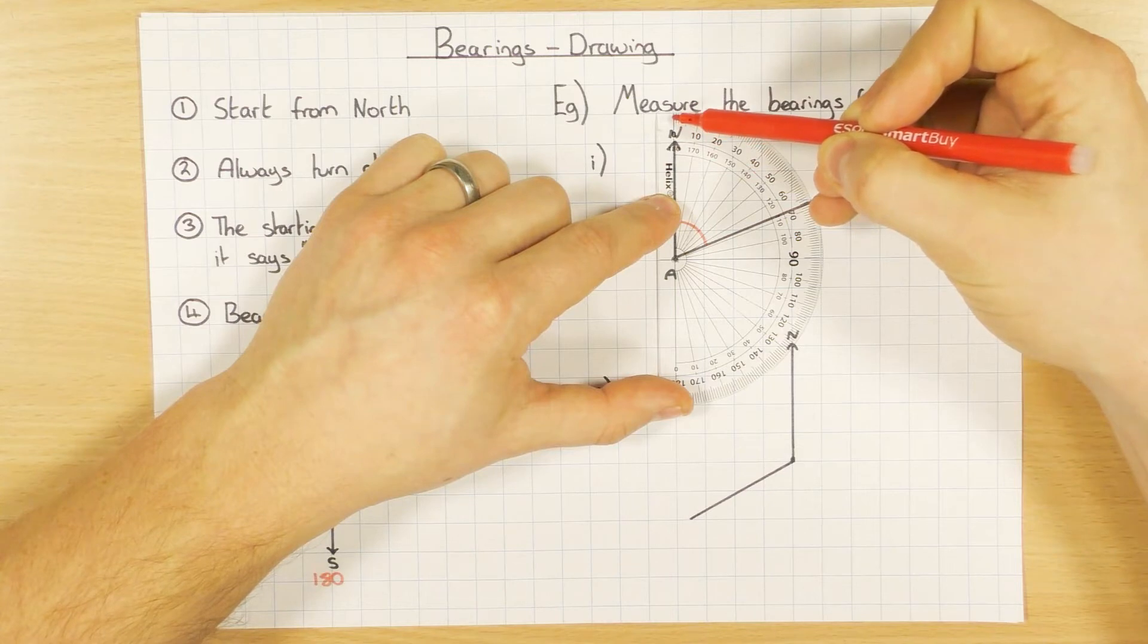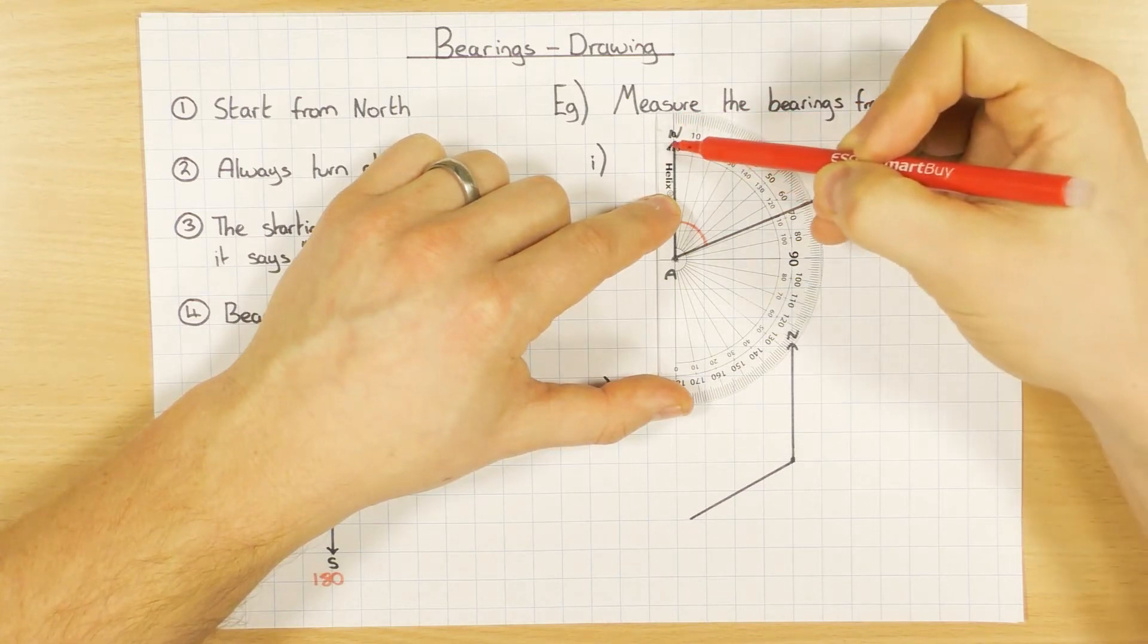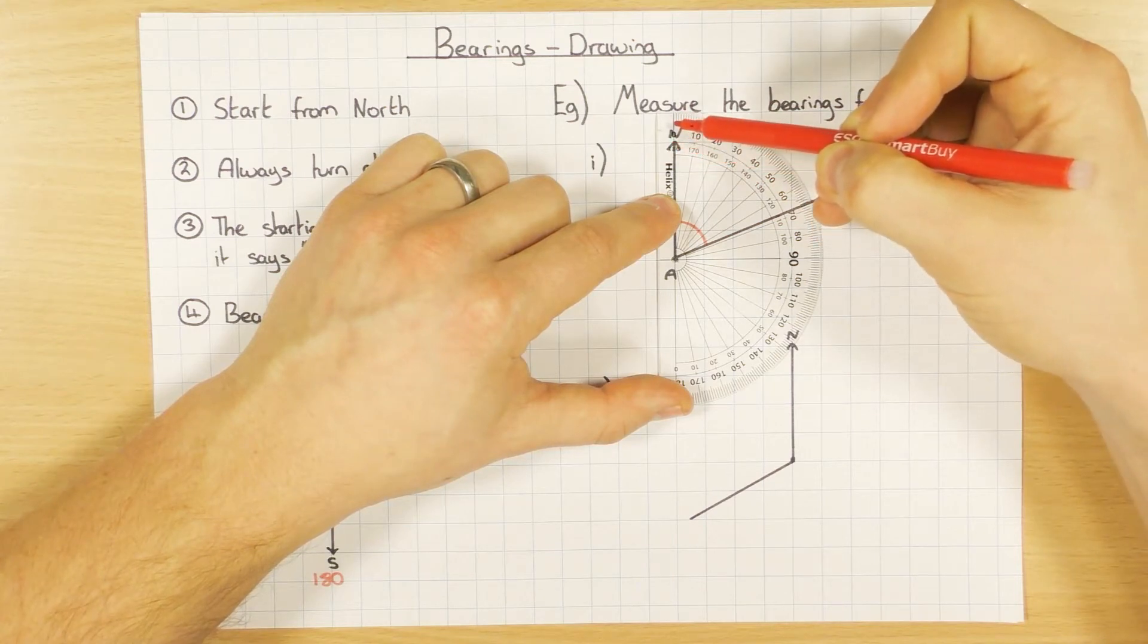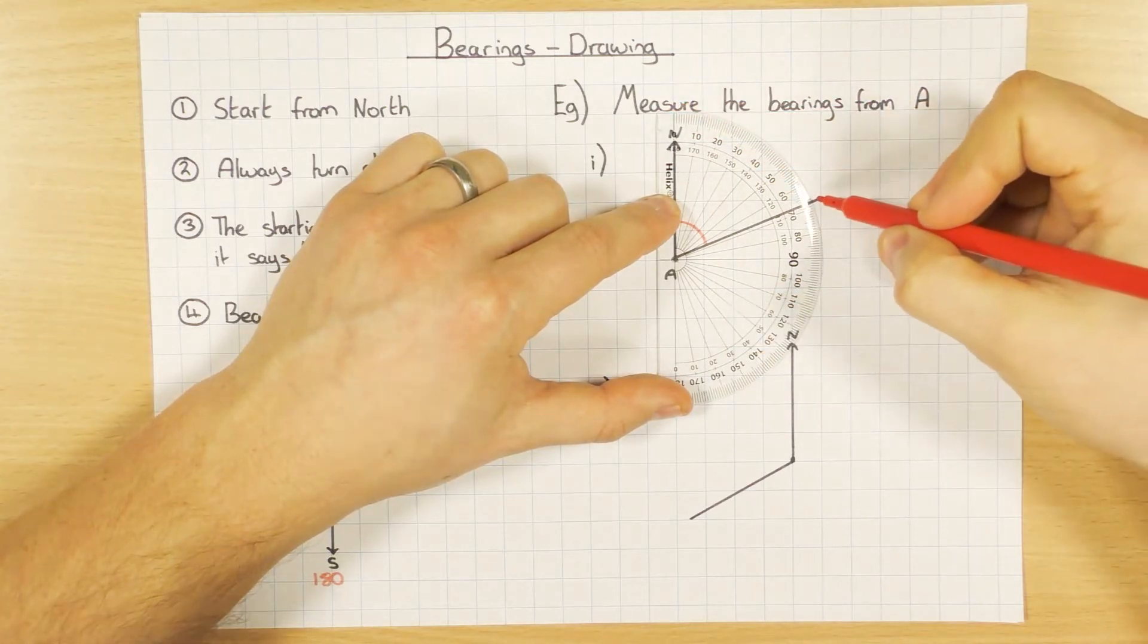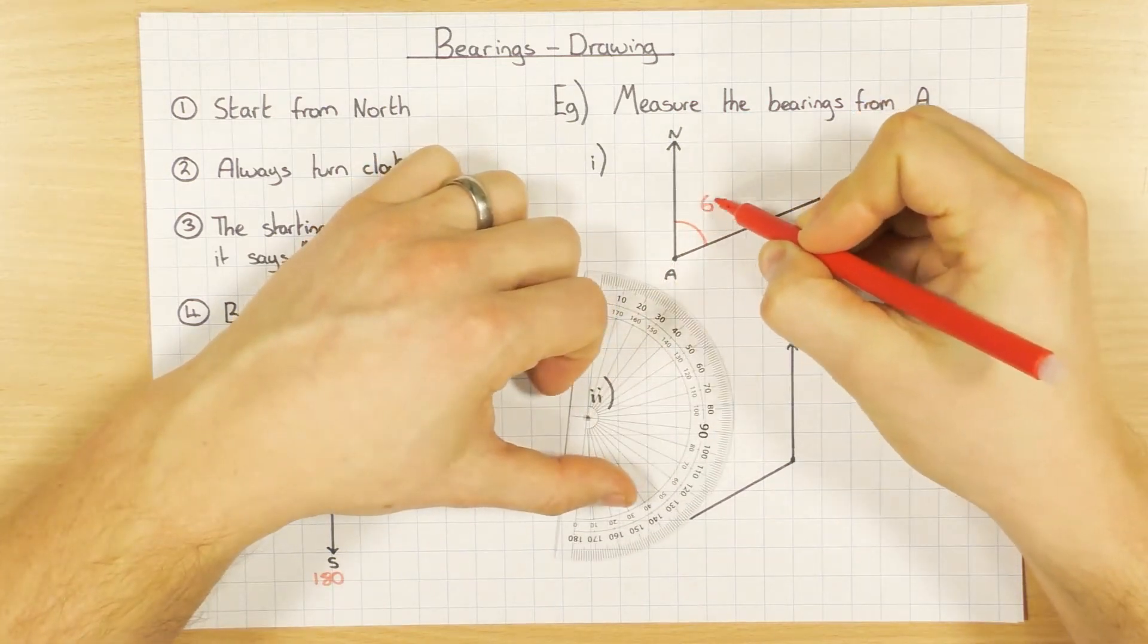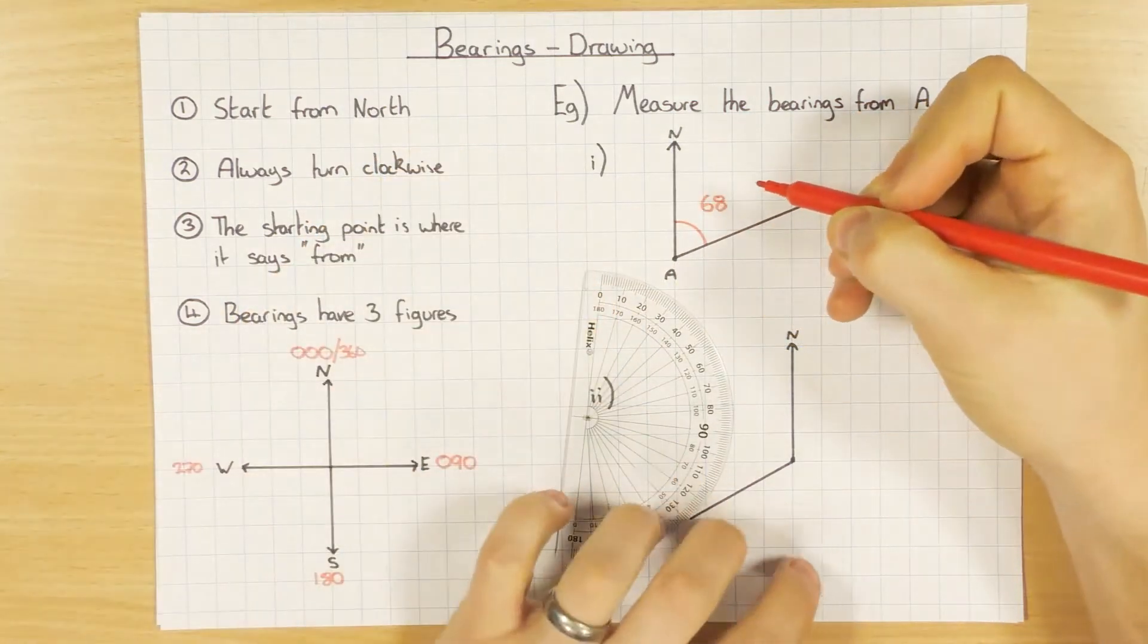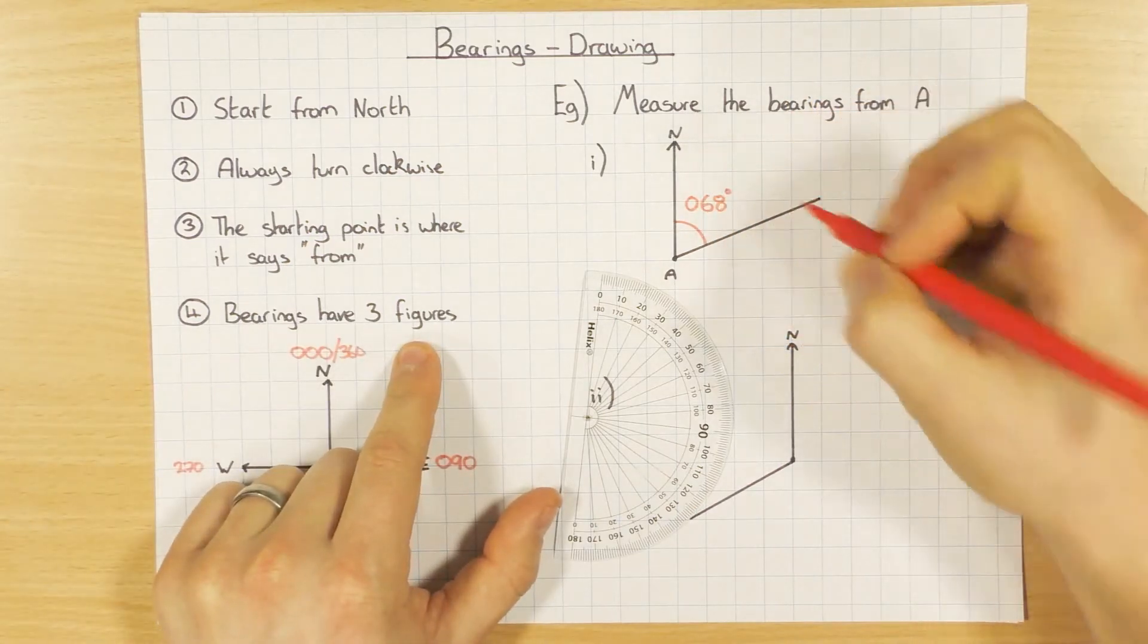And we're starting at zero. So because we're starting at zero, I'm using the outside of the protractor, not the inside, because the inside starts at 180. The outside starts at zero, and I need to start there. So if I have a look round, that looks like it's 68. So just a reminder, it's three figures. So it would be the bearing of 068 degrees.